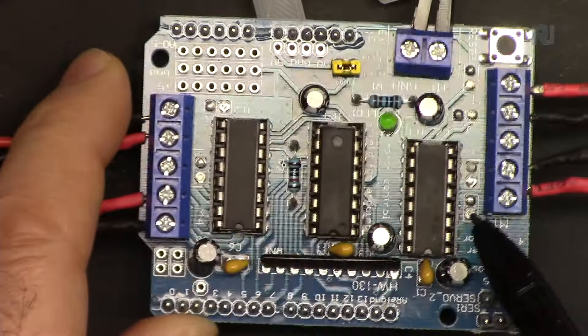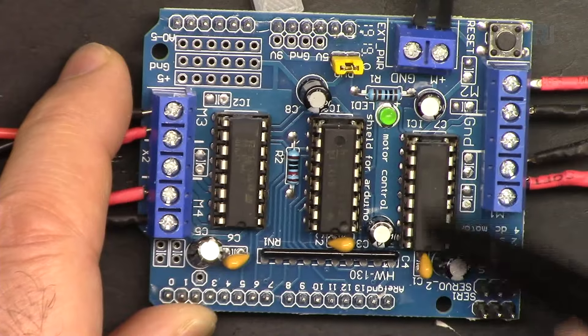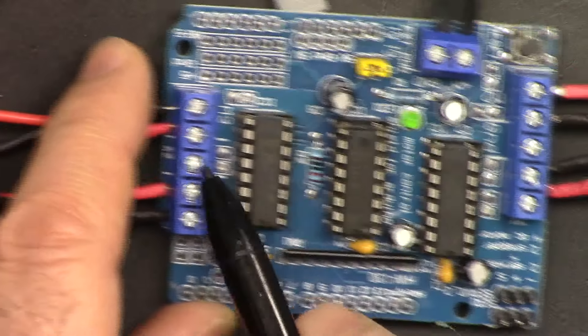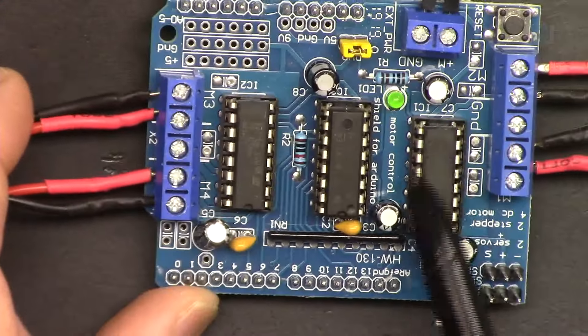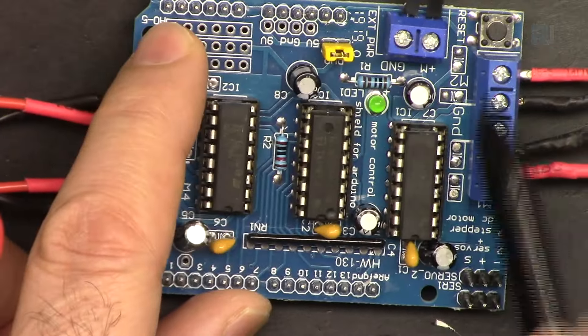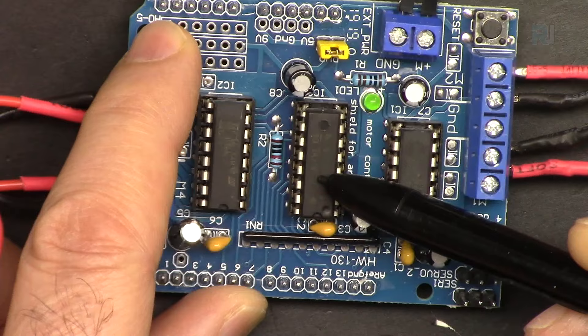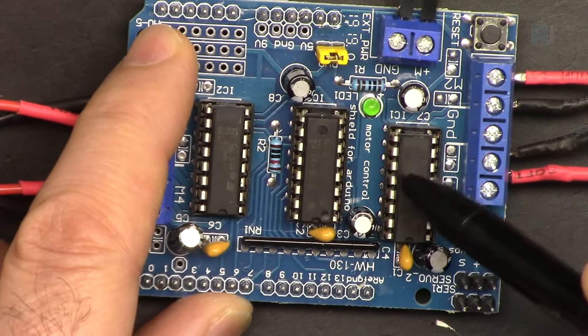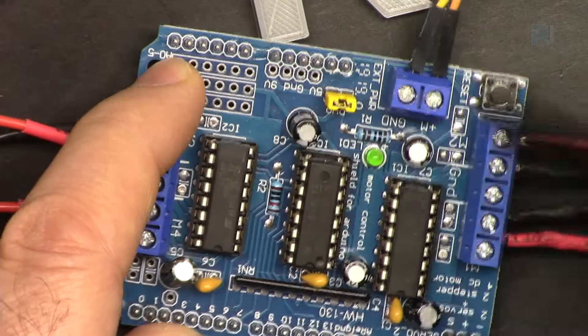On the module we have L293D two pieces because one can control two motors, so we have two of this. So this will control two motors that are connected in here, and this chip L293D will control two motors. These two chips will be controlled by this other chip, and we are not worried how this functions because it will be just a waste of time. We just connect it and it will work, but you need separate external power.